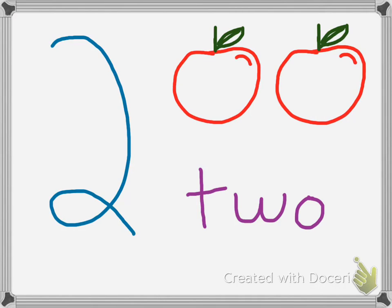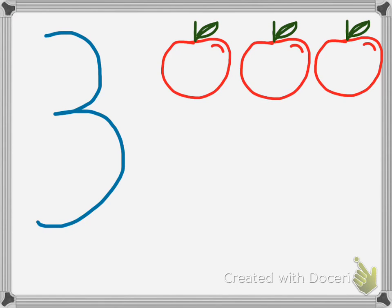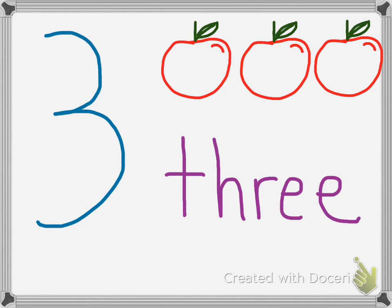After 2 comes the number 3. Say the number 3. And as you can see, we already have 3 apples. 1, 2, 3, and below them you see the number 3. So say the number 3. Great!